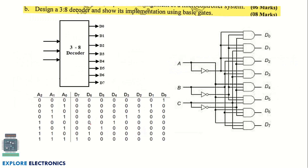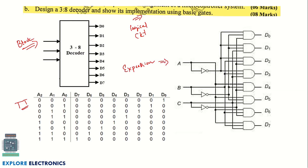The next question asks you to design a 3-to-8 decoder and show its implementation using logic gates. Start with the block representation of the 3-to-8 decoder, then write the truth table, derive the logical expressions, and implement them using basic gates. Since the question specifies basic gates, you must use only NOT, AND, and OR gates — universal or derived gates are not allowed.